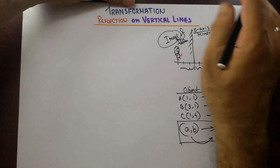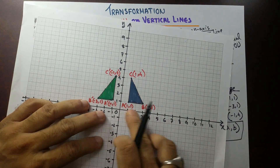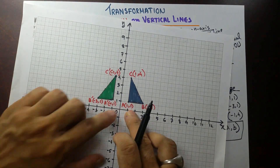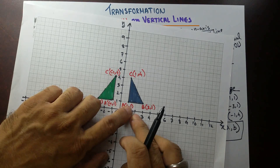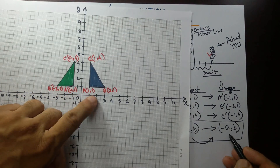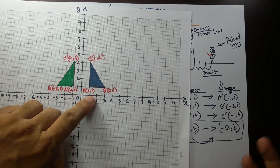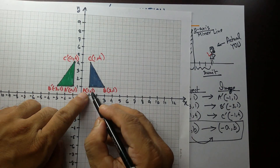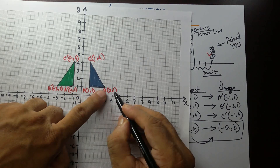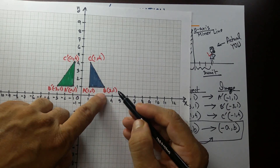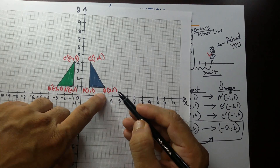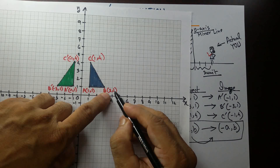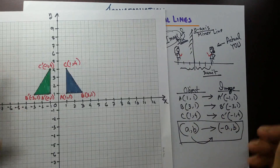Using that formula, the coordinates of A prime — the image — would be (-1,1). For B with coordinates (3,1), the image of B would be (-3,1). Same way for all points.